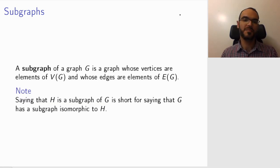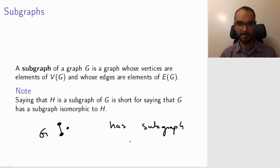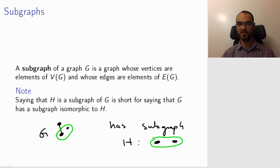And sometimes we are a bit sloppy, and we say that H is a subgraph of G. What we mean is that our graph G has a subgraph isomorphic to H. So for example, this graph G has subgraph H, which is just two disconnected nodes. Why is that? Well, because if I take these two vertices and not the edge and not the third vertex, then I will get something isomorphic to H. That is why H is a subgraph of G.